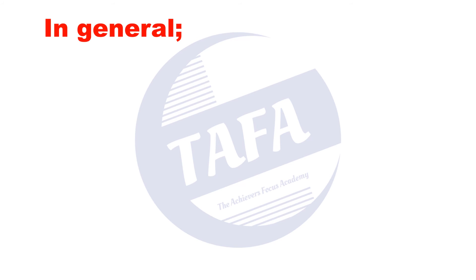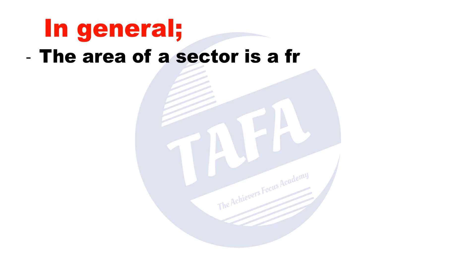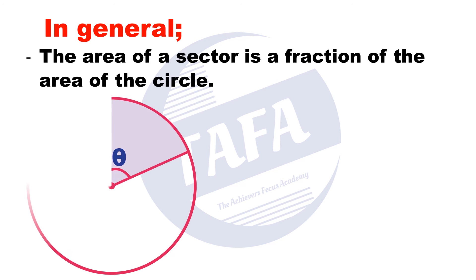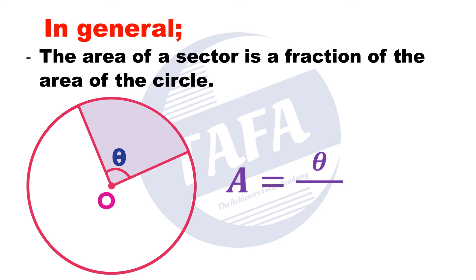In general, the area of a sector is a fraction of the area of the circle. If you are given a circle with center O and a shaded sector whose central angle is theta, then the area of the sector equals theta over 360, multiplied by pi r squared.